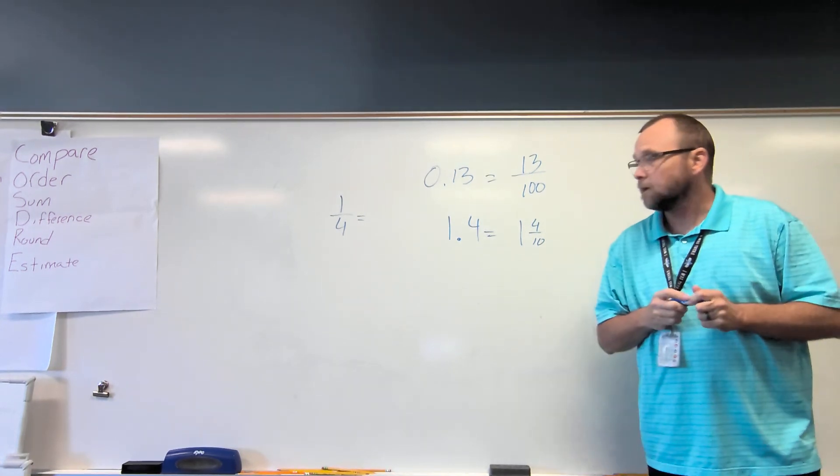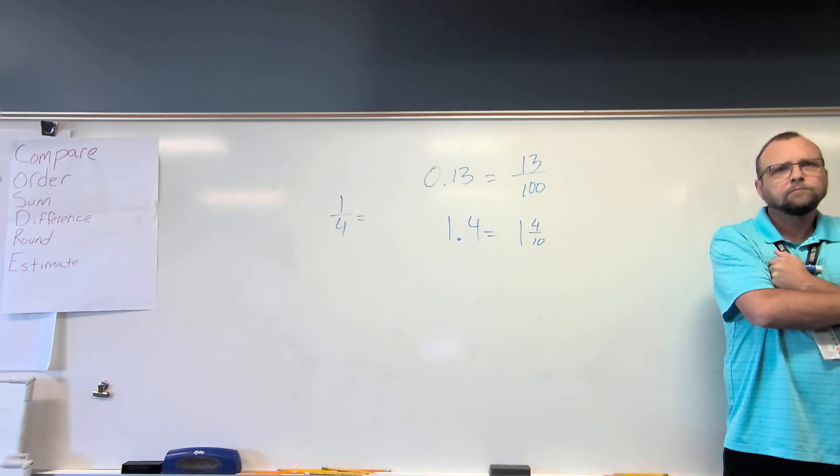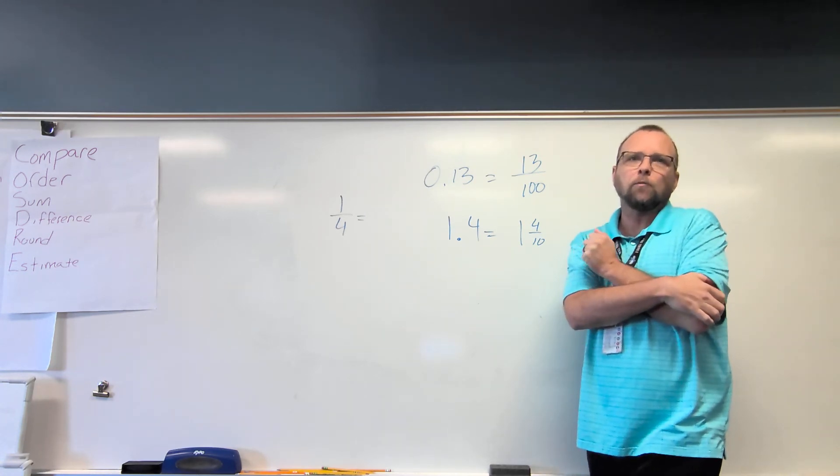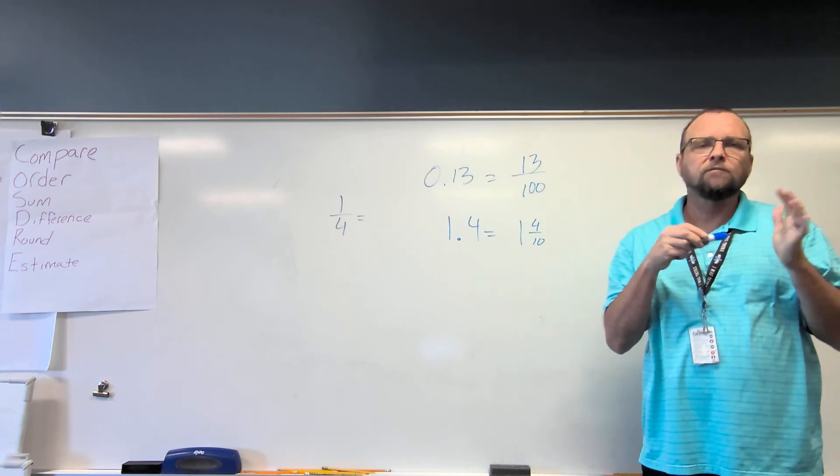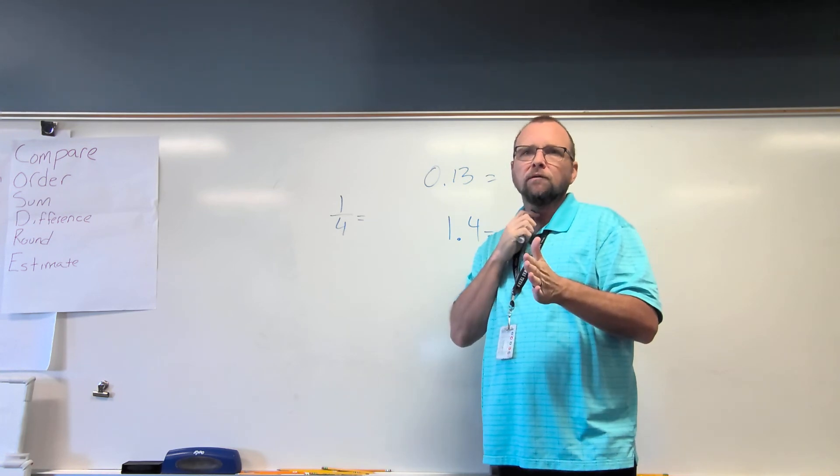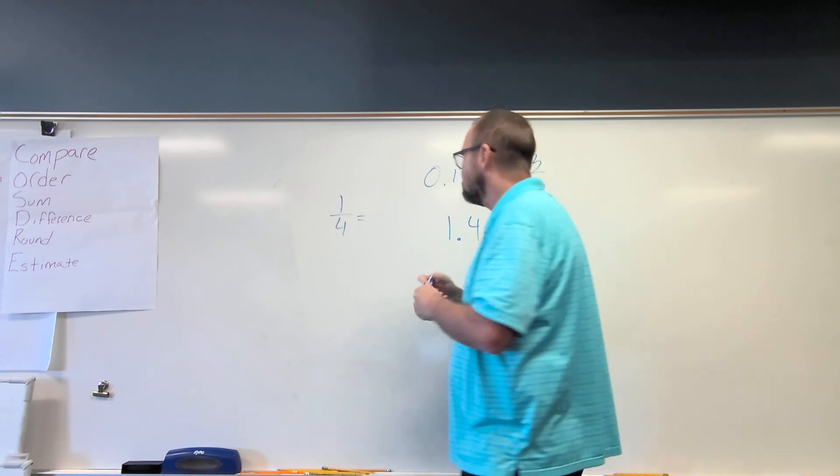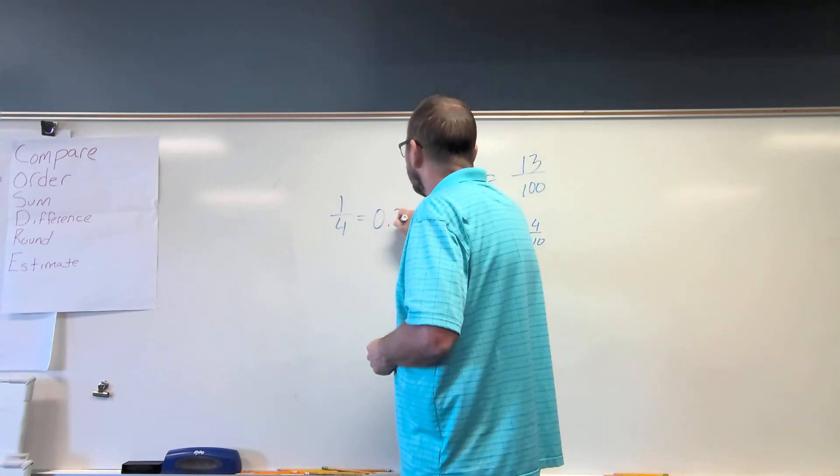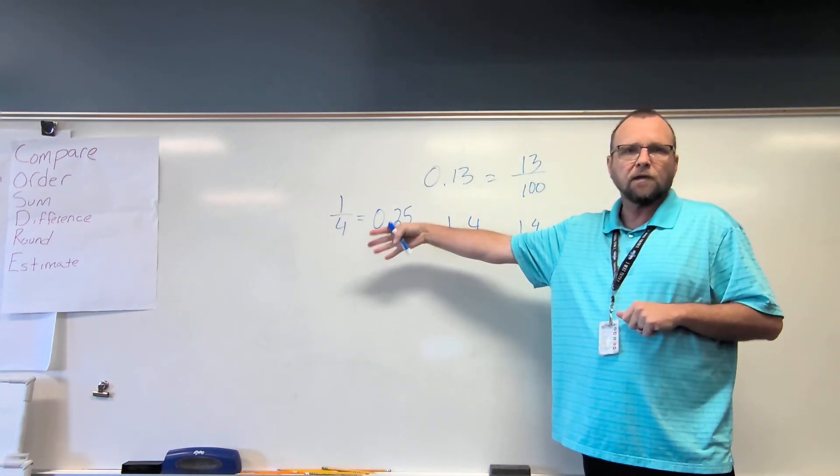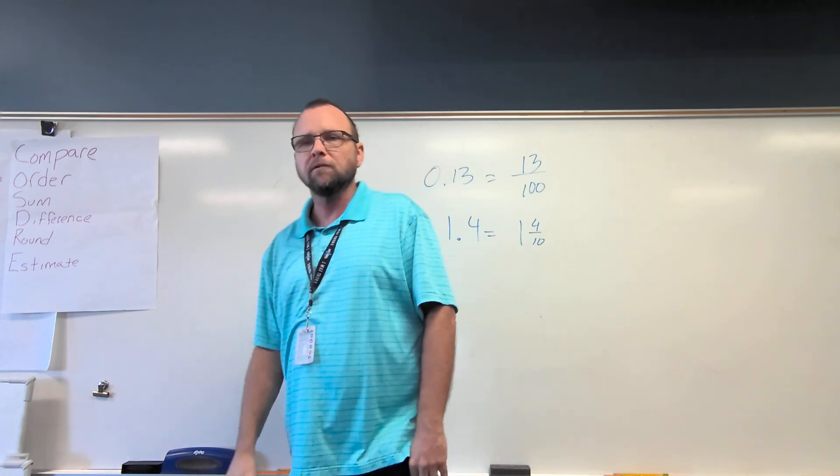What would 1 fourth be as a decimal? Jayden, do you know what 1 fourth is as a decimal? If you have 1 fourth of a dollar, how much do you have? 0.14. No? 1 fourth of a dollar. Take a dollar, divide it into four equal parts. How much do you have? What's half a dollar? 50 cents. What's half of that? 25 cents. So 1 fourth is going to equal 25 hundredths. Because it's quarters. Four quarters make a dollar. 1 fourth is 25 hundredths. So you'll know some of them like that.